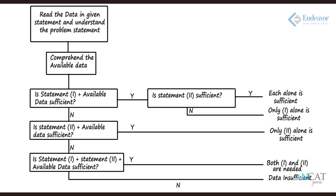We need to check: statement one alone is sufficient, but is statement two alone sufficient or not? If statement two is also sufficient, we cannot mark option A as the answer — we have to go back and mark option C or D. If statement one alone is not sufficient, we still have to check statement two. If statement two is sufficient, we can mark option B — statement two alone is sufficient but statement one is not.